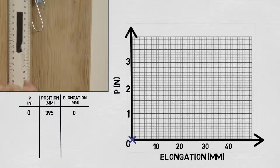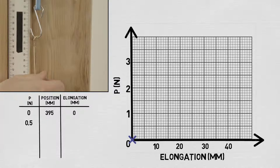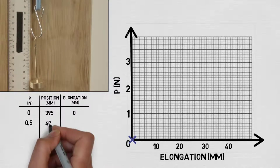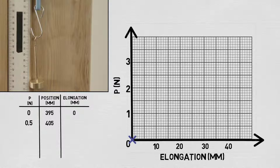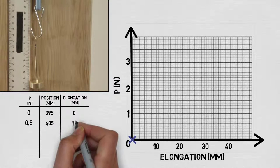Now let's add our first load, 0.5 newtons. The tip of the hook is now at 405 millimeters, and based on our initial measurement, the spring has elongated 10 millimeters.